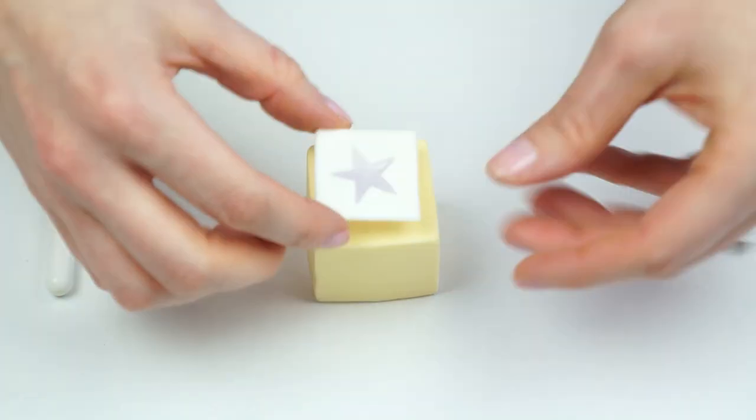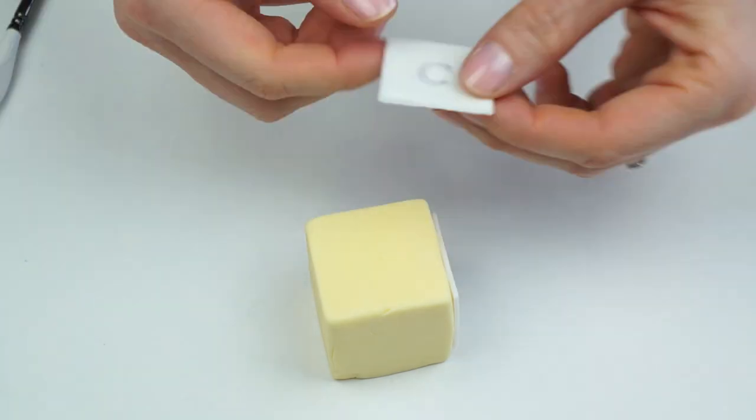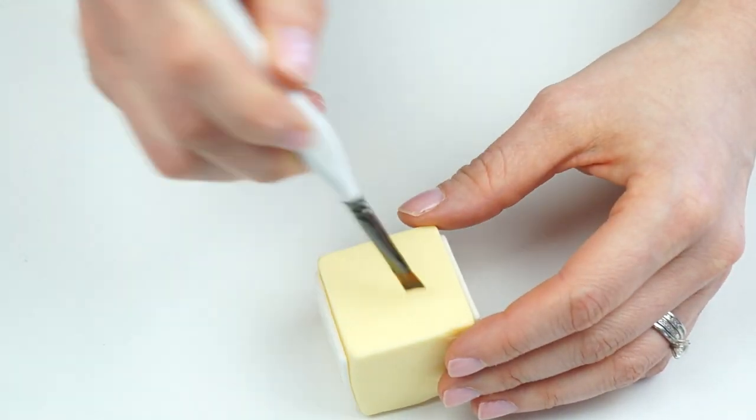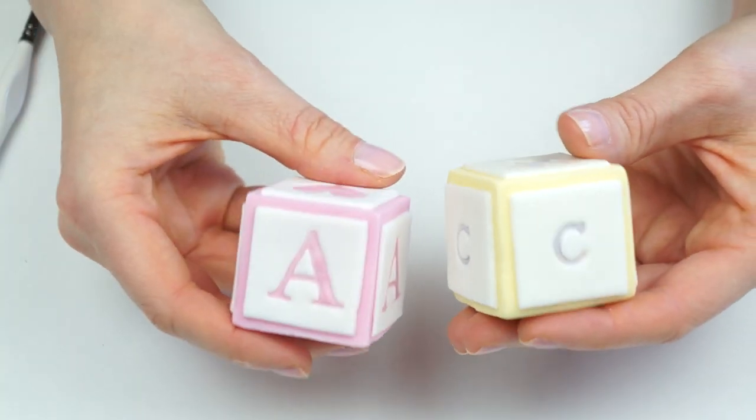Now I do prefer to stamp my letters and then cut them out with a square cutter. I do find that if you cut the squares first and then stamp the letters the fondant can be pushed out slightly as you emboss your squares so it makes the sides slightly bowed. So there we have our first two cubes, we've got the A and the C and we've used the Sweet Stamp letter sets for these.